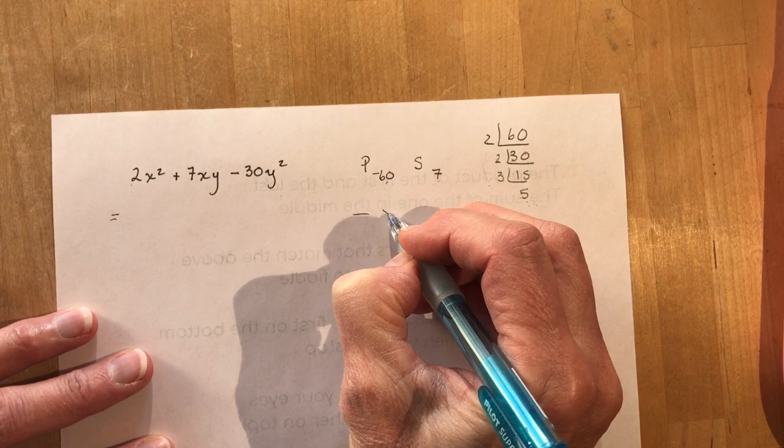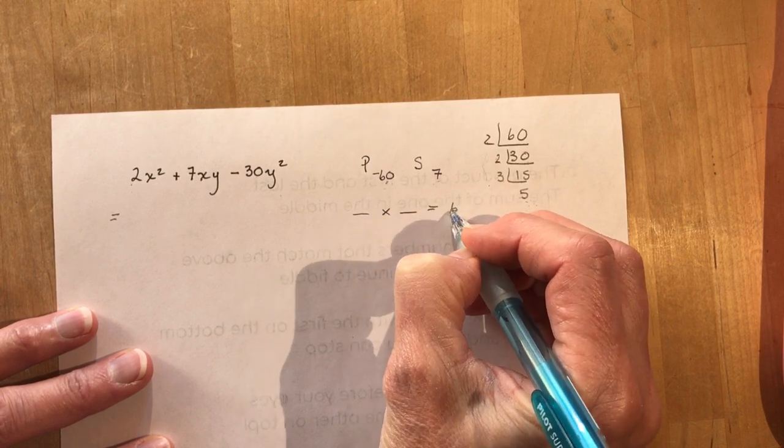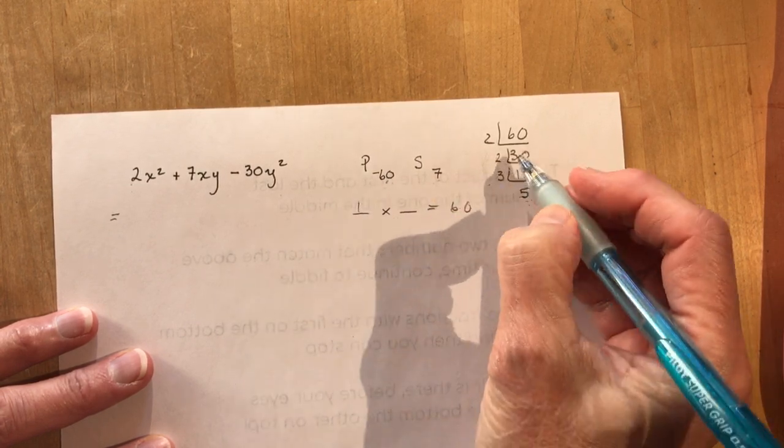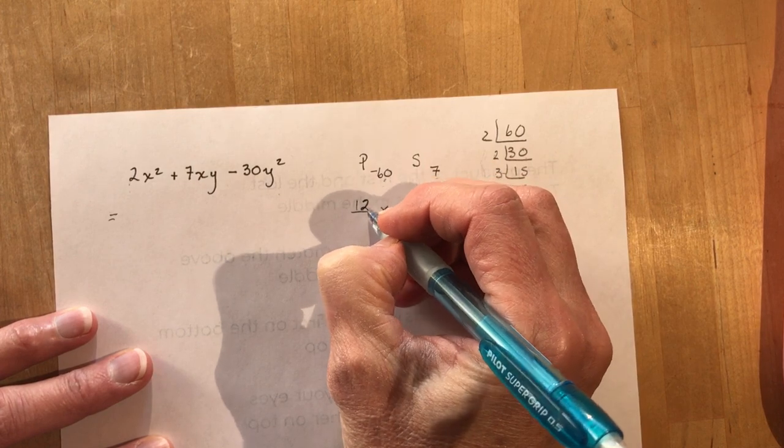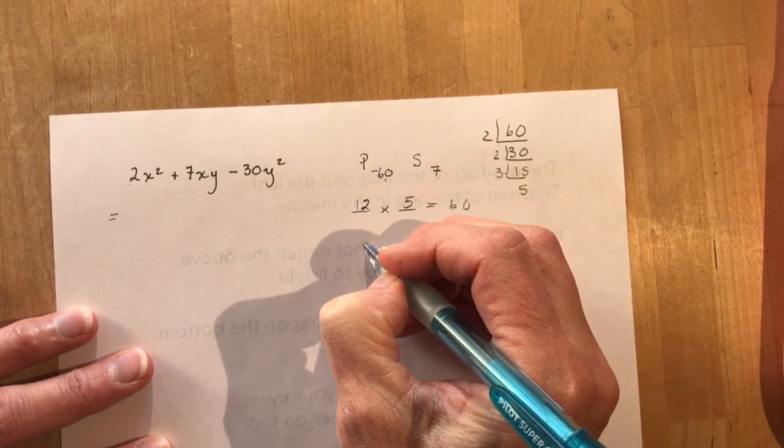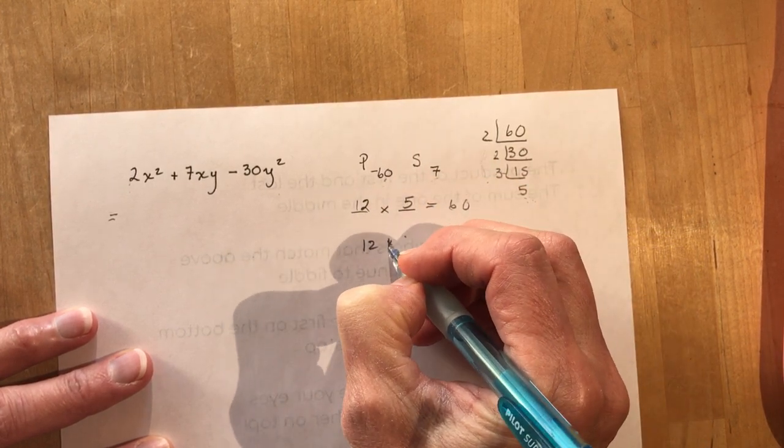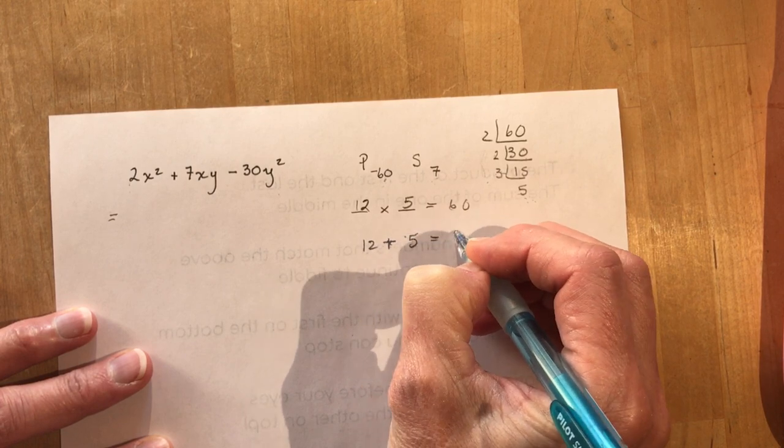12 and 5. So product, I want 12 times, what did I say? 12 times 5. 12 times 5 gives me 60. 12 plus 5 has to be 7.